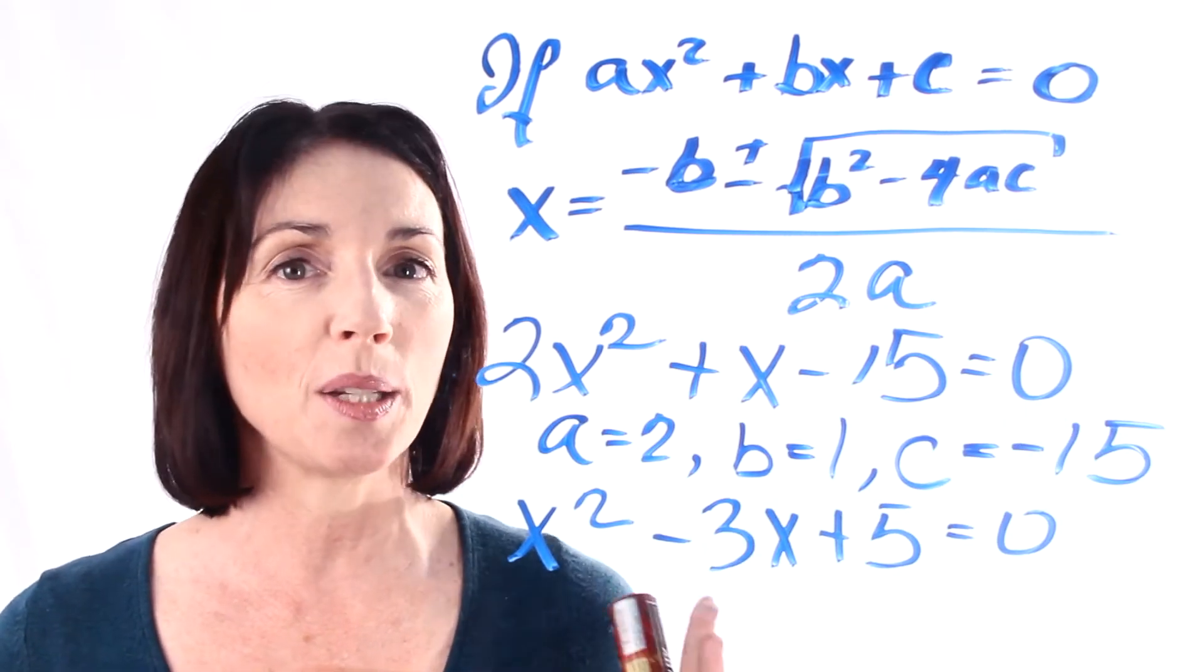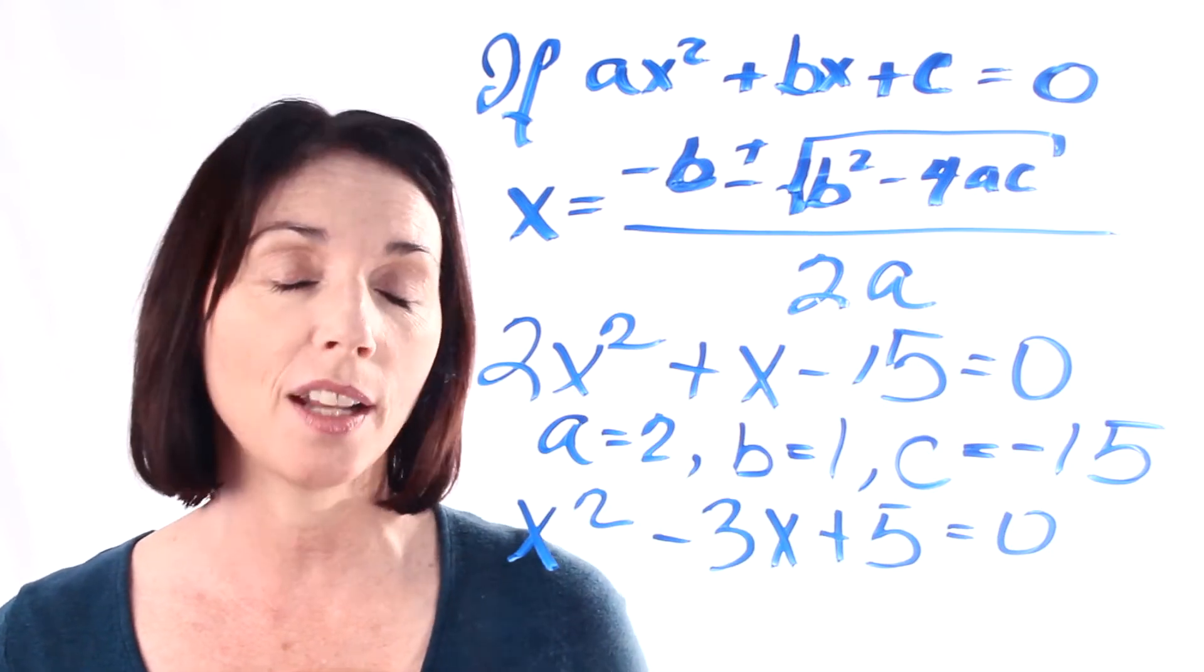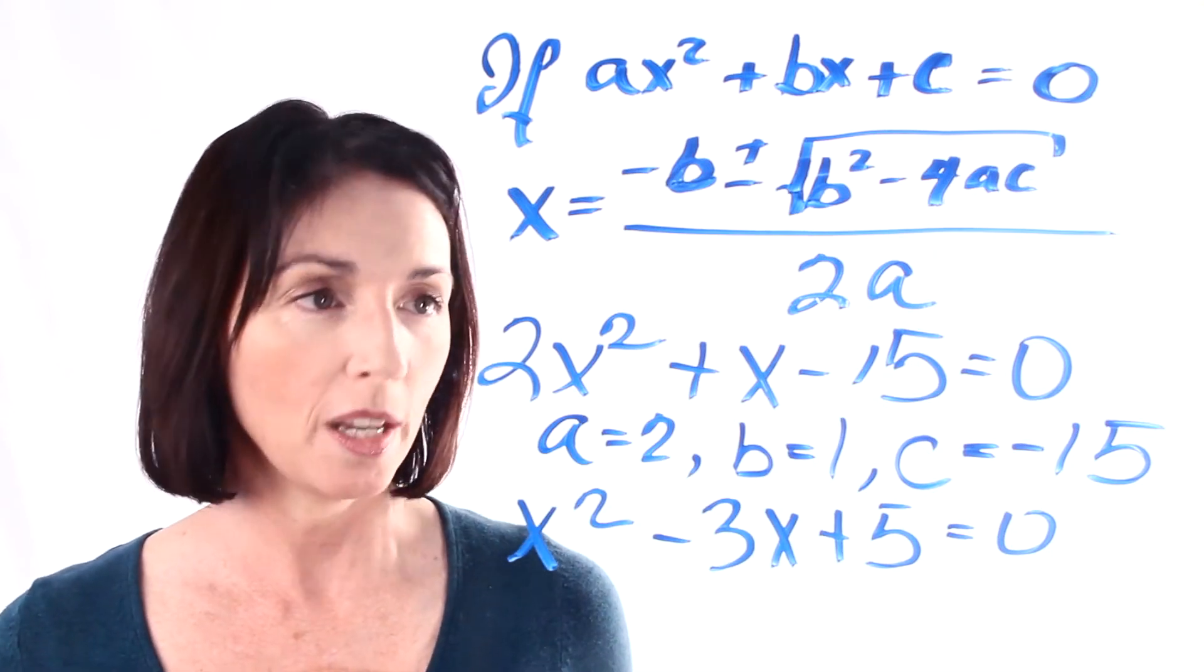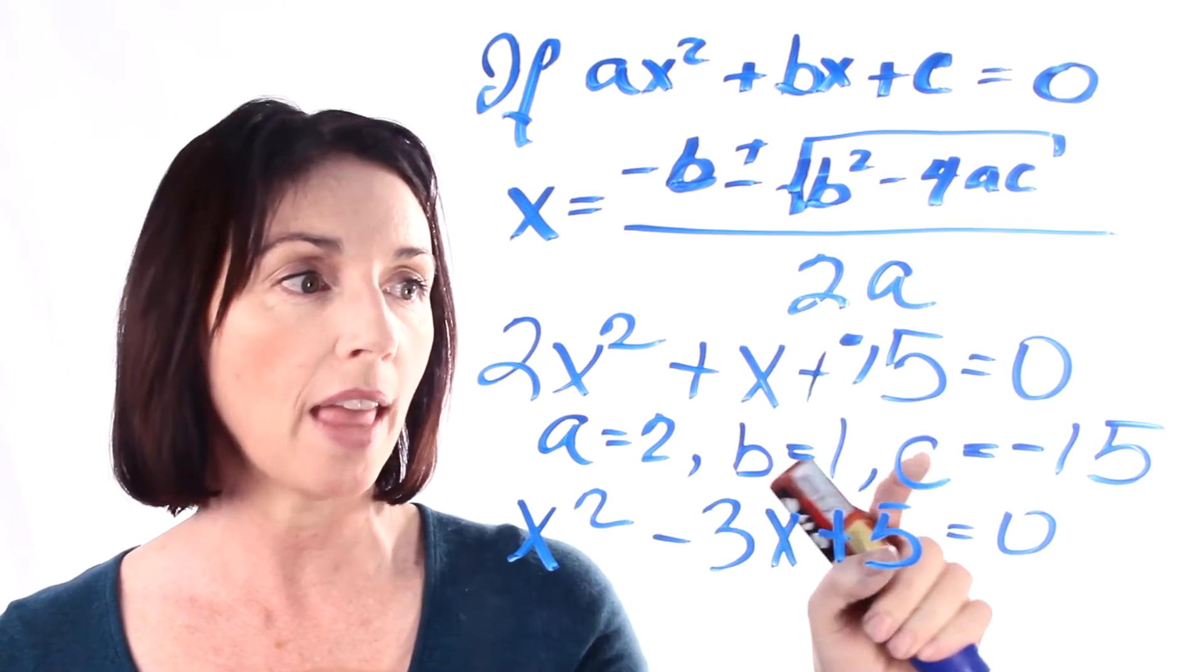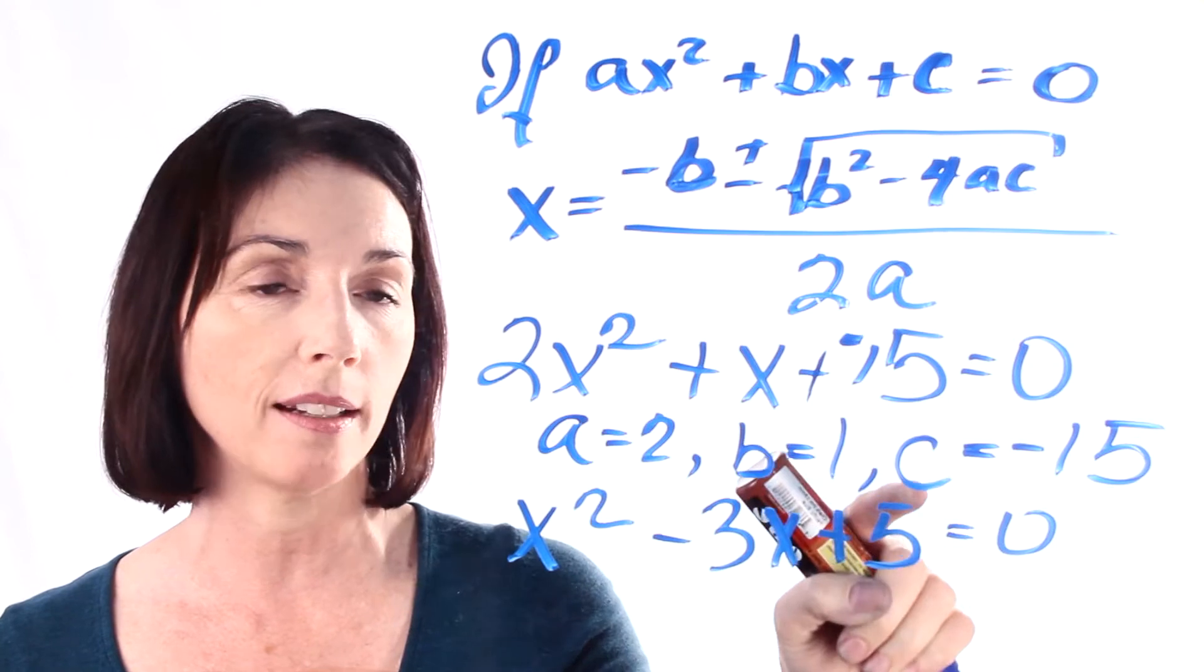It's really important that you get the signs right. One wrong sign and your whole solution will be off. So don't forget that when you're subtracting, you can always make that addition of a negative. And that way you can be sure you get the right sign on c.